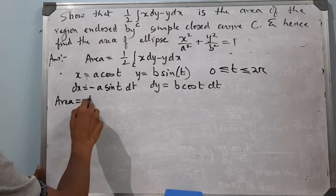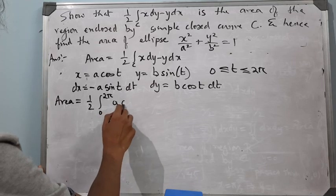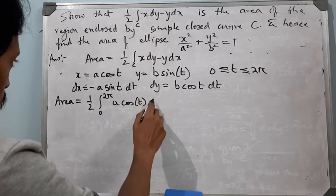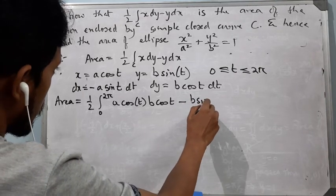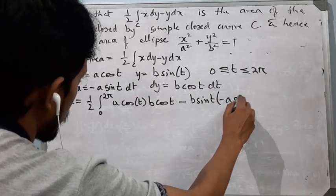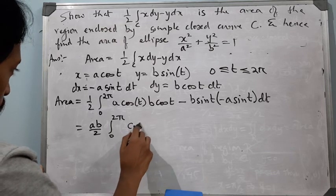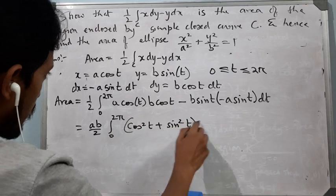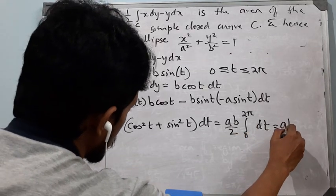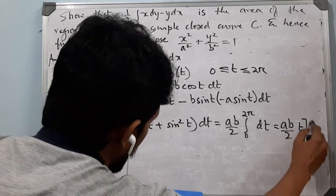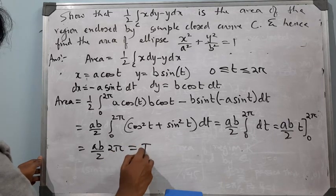So dx = −a sin t dt and dy = b cos t dt. The area equals (1/2) ∫₀^{2π} [a cos t · b cos t dt − b sin t · (−a sin t dt)] = (ab/2) ∫₀^{2π} (cos²t + sin²t) dt = (ab/2) ∫₀^{2π} dt = (ab/2)[t]₀^{2π} = πab.